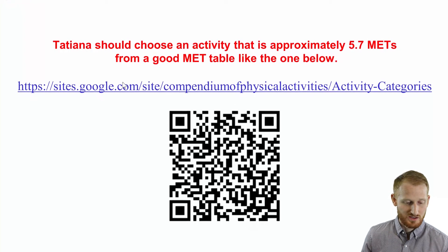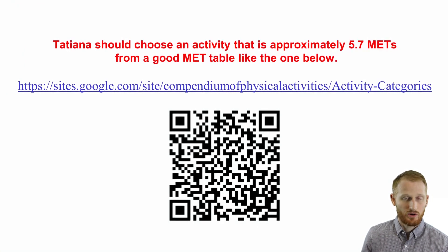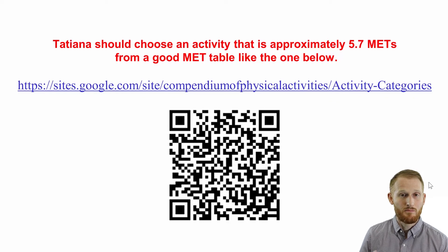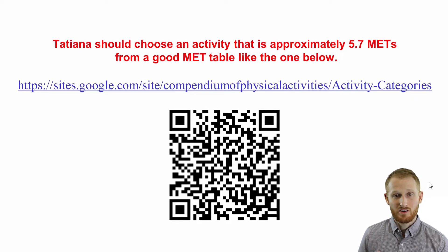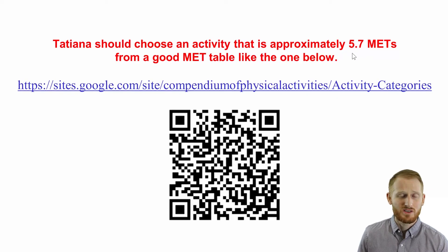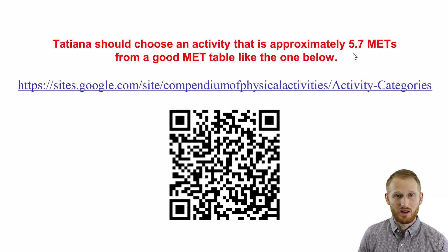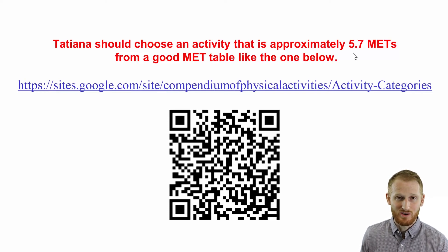You can go to the link here, or scan the QR code, which will take you to that link. It's going to show you a table filled with activities where the MET level for each activity is already known. You can simply look for something that is around 5.7 METs — there's a little bit of error to this, so somewhere between 5.5 and 6 METs is really what you're looking for. It's pretty simple to find loads of activities that will get you close to the exercise prescription intensity you've been given.